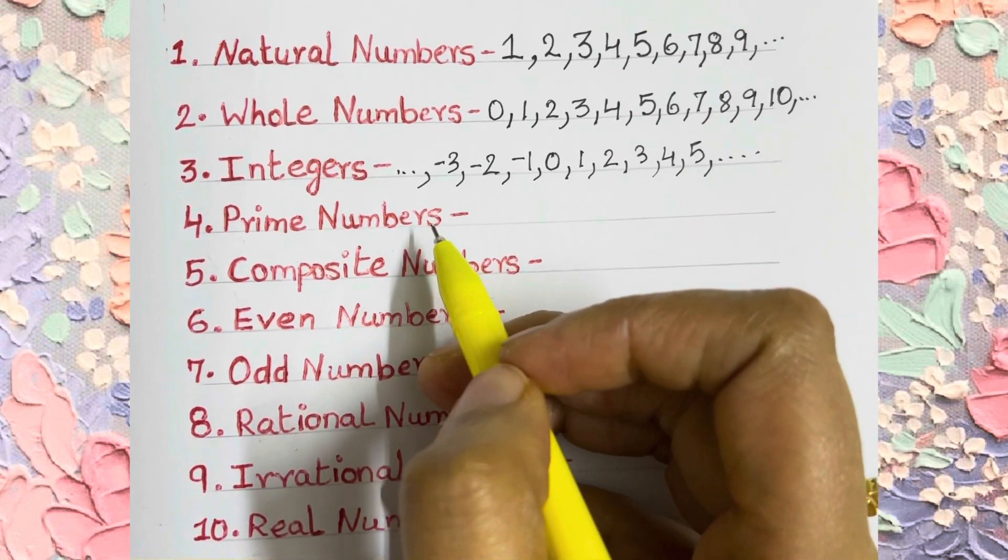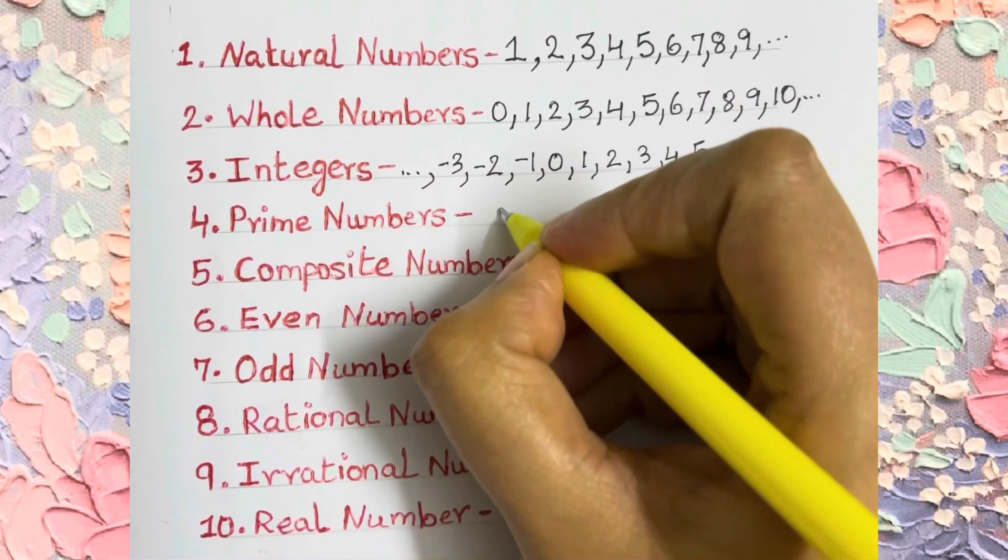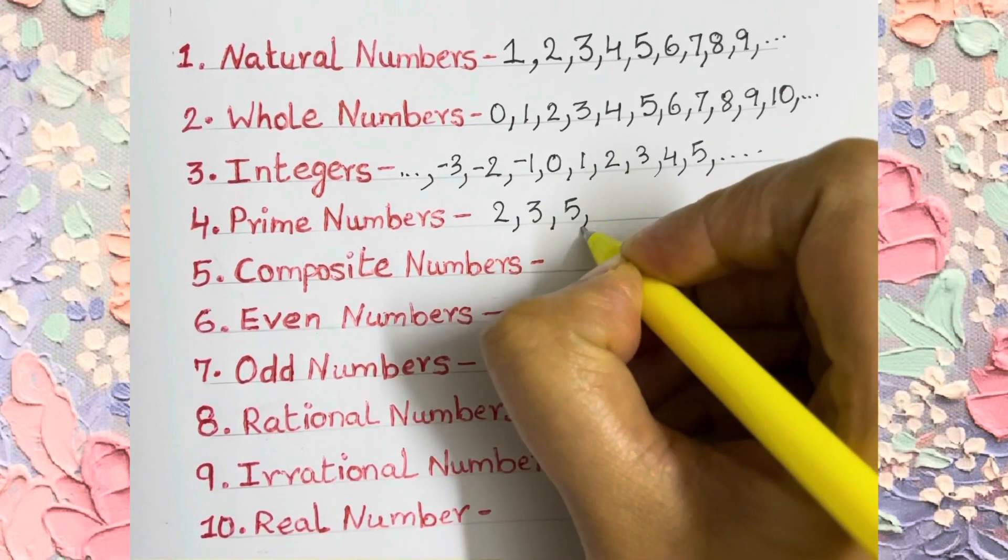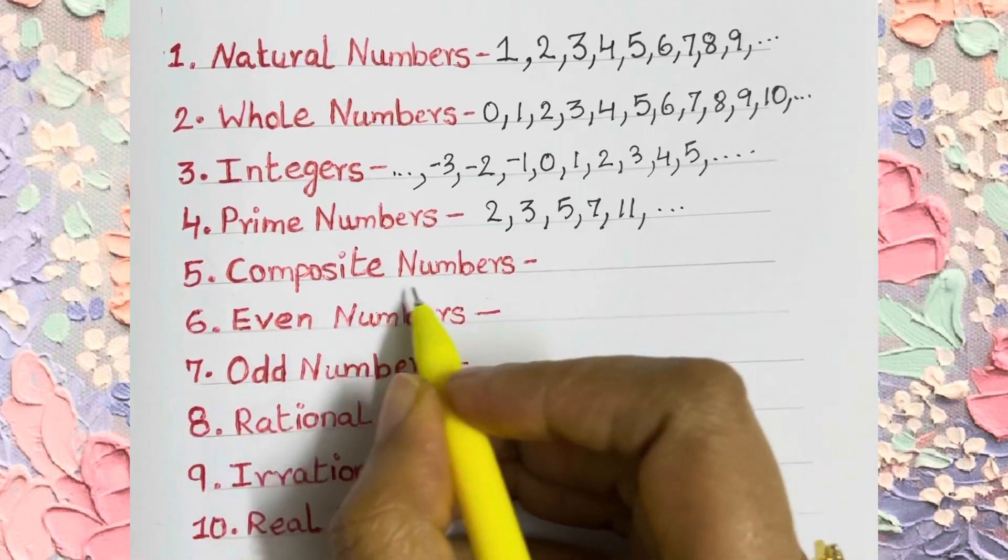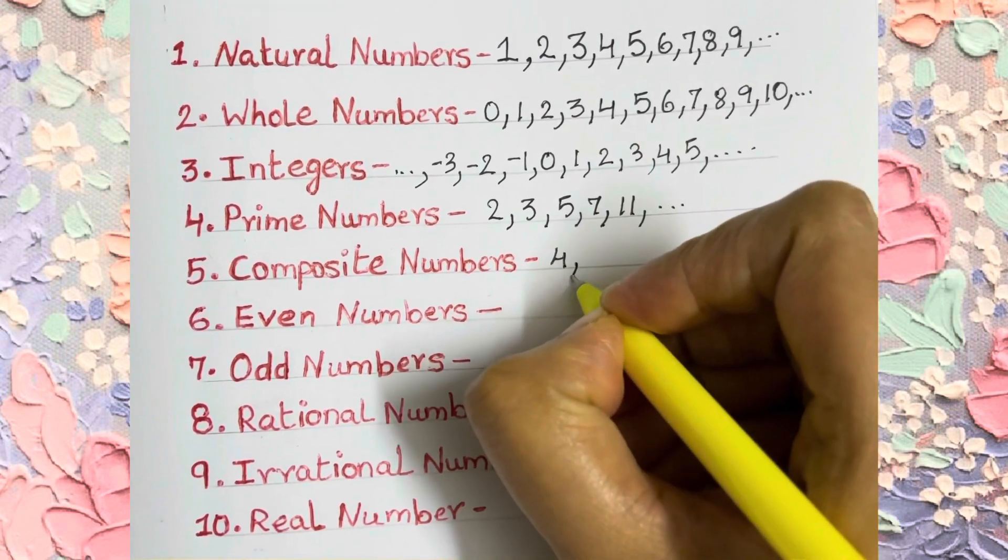And now the numbers which have two factors, that is the number which is divisible by itself and one, are called prime numbers. That is 2, 3, or for example 23.